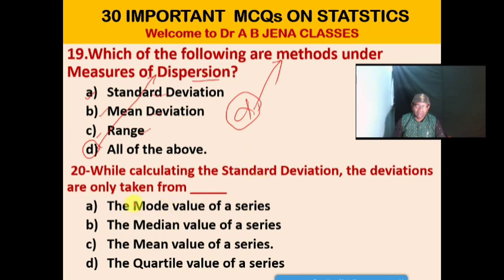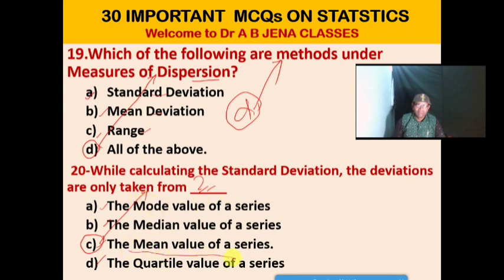Next MCQ: While calculating the standard deviation, the deviations are only taken from where? A. Mode value of a series. B. Median value of a series. C. Mean value of a series. D. Quartile value of a series. C is the right option. While calculating the standard deviation, the deviations are only taken from the mean value of a series.